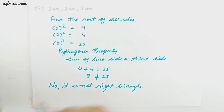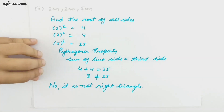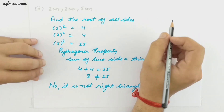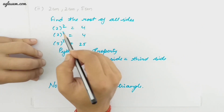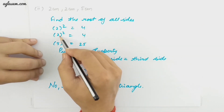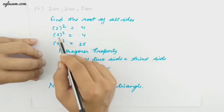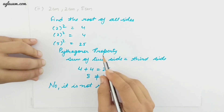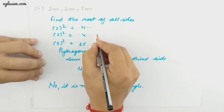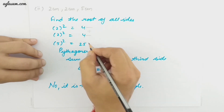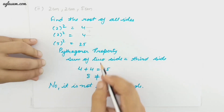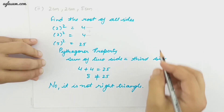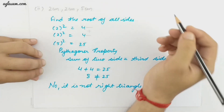For part two of question 4, we find the square of each measurement. The square of both the 2s is 4 and 4, and the square of 5 is 25. Using Pythagoras property, the sum of 4 and 4 is 8, which is not equal to 25. So this measurement will not form a right triangle.